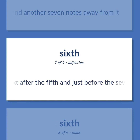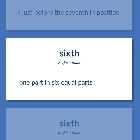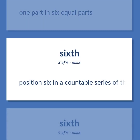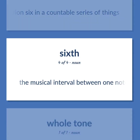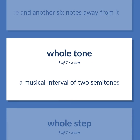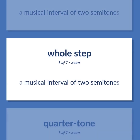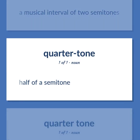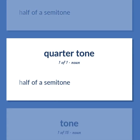Sixth: coming next after the fifth and just before the seventh in position. One part in six equal parts. Position six in a countable series of things. The musical interval between one note and another six notes away from it. A musical interval of two semitones. Half of a semitone.